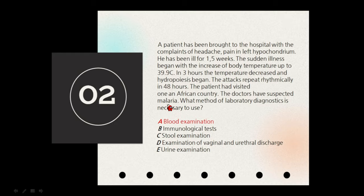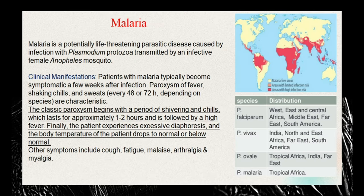Malaria is a parasitic disease caused by Plasmodium protozoa. The vector of this Plasmodium protozoa is the Anopheles mosquito — specifically the female Anopheles.